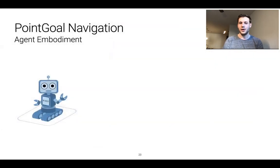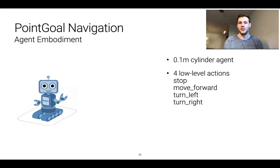The agent has the following embodiment in the environment. The agent is modeled as a cylinder with a radius of 0.1 meters and has access to four low-level actions. Stop which the agent uses to signal that it believes it has reached the goal. Move forward which moves it 0.25 meters forward. Turn left which turns it 10 degrees to the left and turn right that turns it 10 degrees to the right.